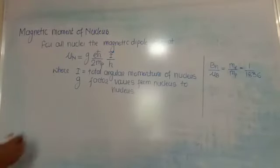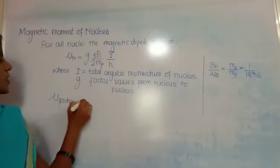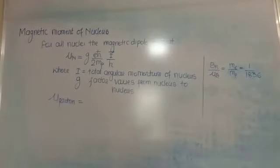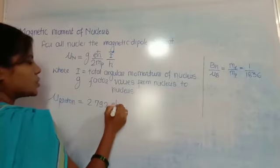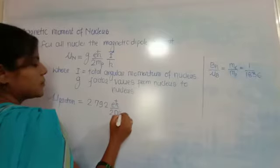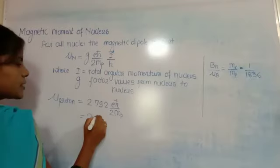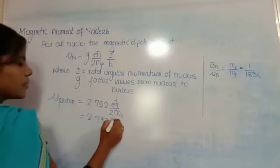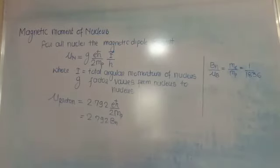The dipole moment of the proton is μ_proton = 2.792 × eħ/2mₚ, which is equal to 2.792 nuclear magnetons.